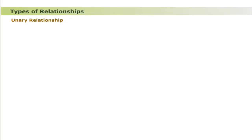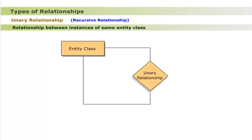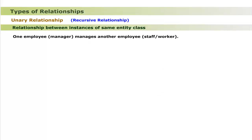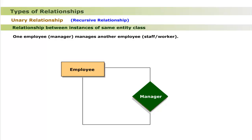Types of relationships: the relationships take many forms. A unary relationship is a relationship between instances of the same entity class — meaning only one entity class is associated with a given relationship. The unary relationship is also called a recursive relationship. For example, one employee (manager) manages another employee (staff/worker). Both manager and staff belong to the employee entity class, with a relationship named 'manage'. The ER model shows that one instance of entity class Employee manages another instance of the same entity class.